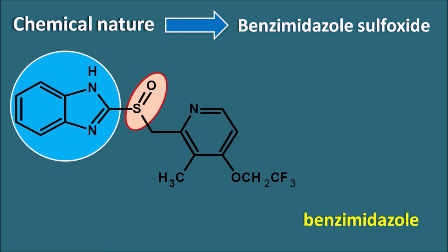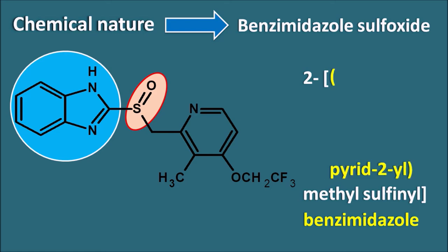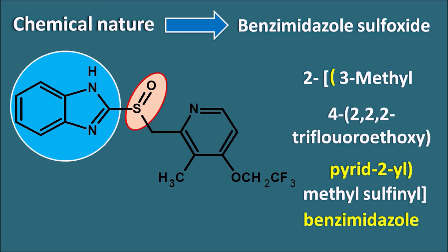When we write the IUPAC name, it becomes 2-methylsulfinyl, since sulfoxide can be indicated as sulfinyl. This methylsulfinyl group is attached to a pyridine ring system at the second position. At the third position of the pyridine ring, a methyl group is present, giving us 3-methyl. At the fourth position, an ethyl group substituted with three fluorine groups is present — a 2,2,2-trifluoroethoxy group. This is the complete IUPAC name of Lansoprazole.